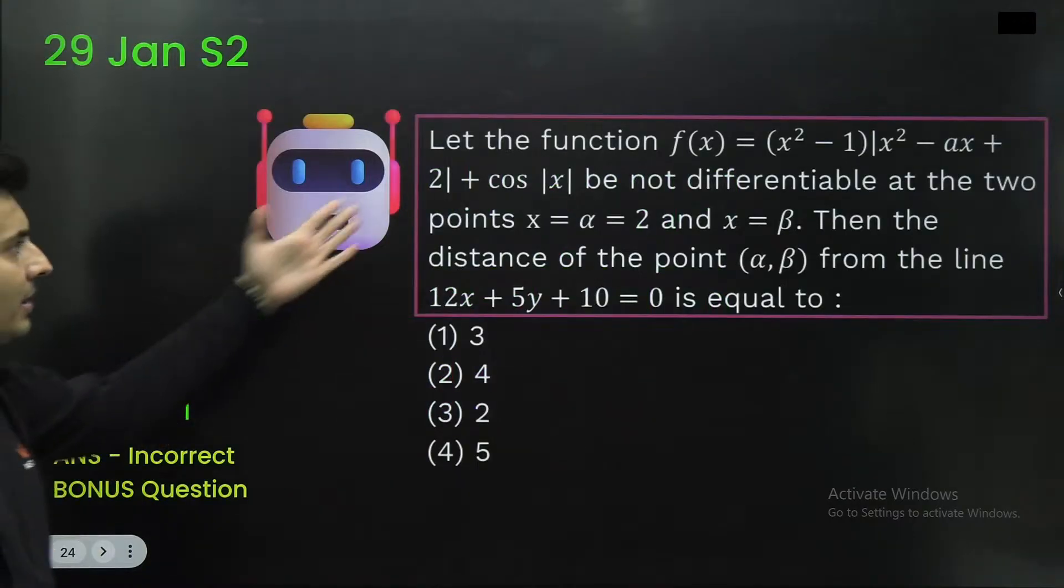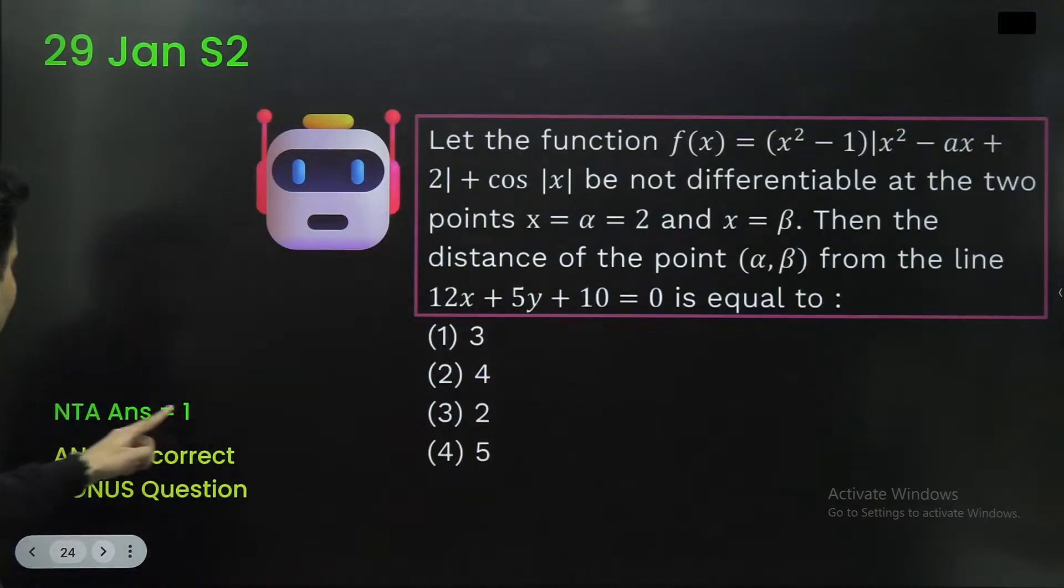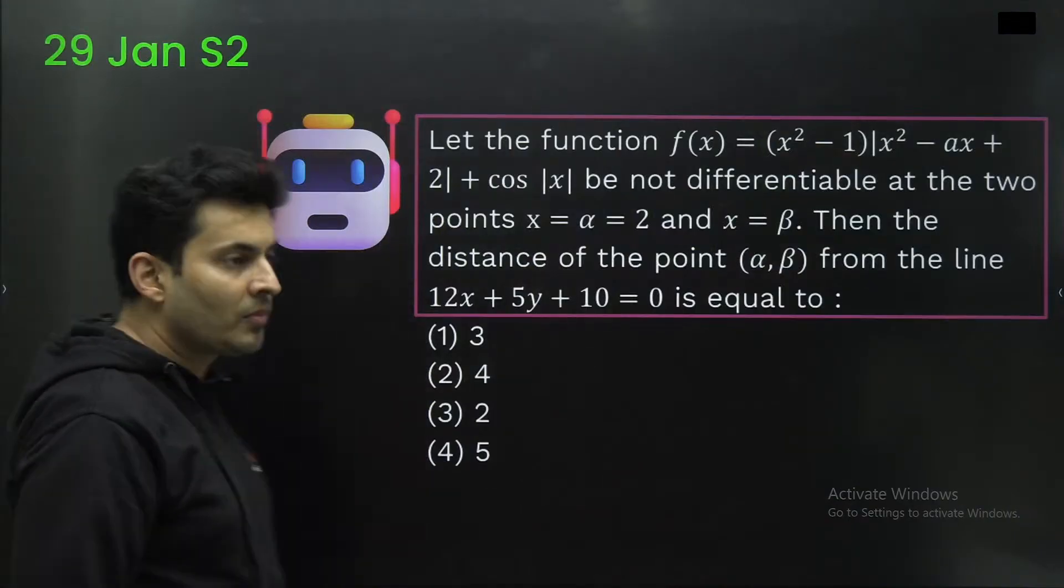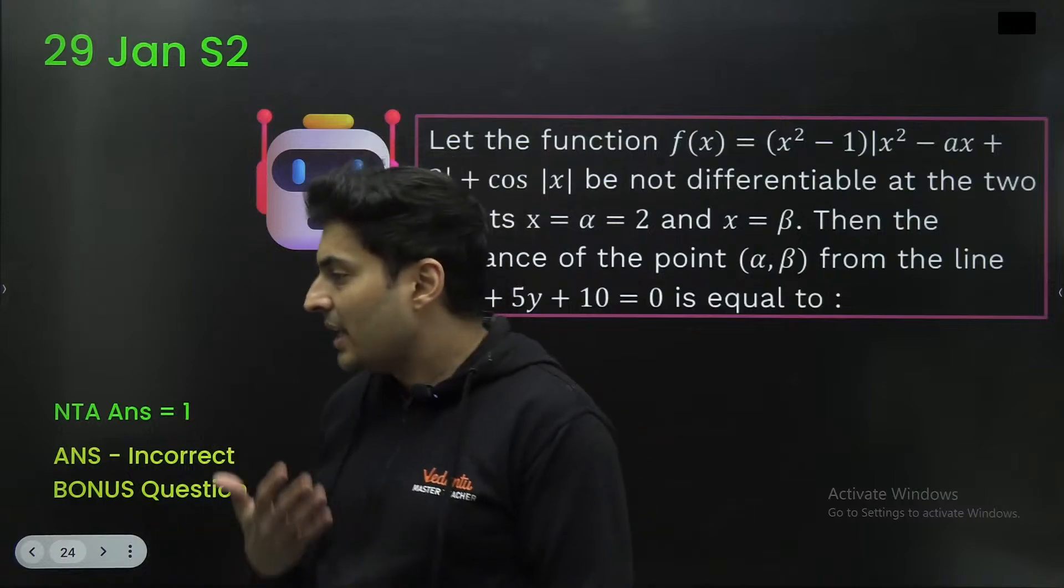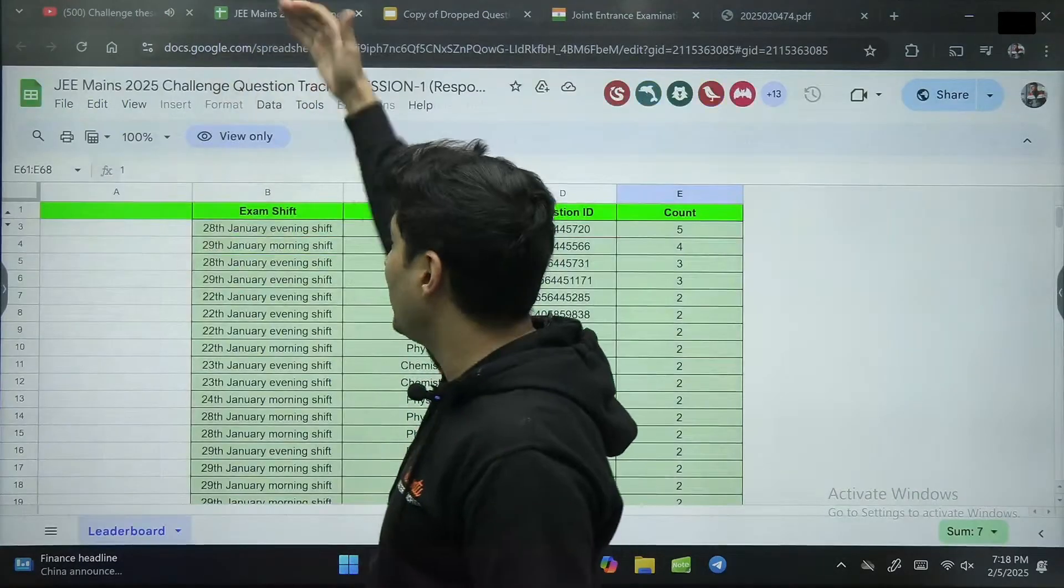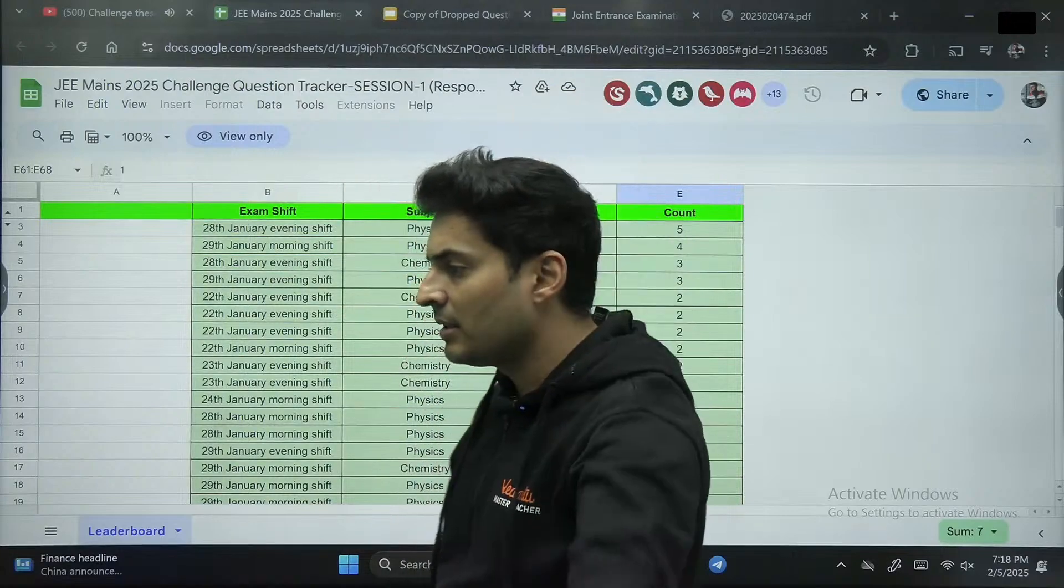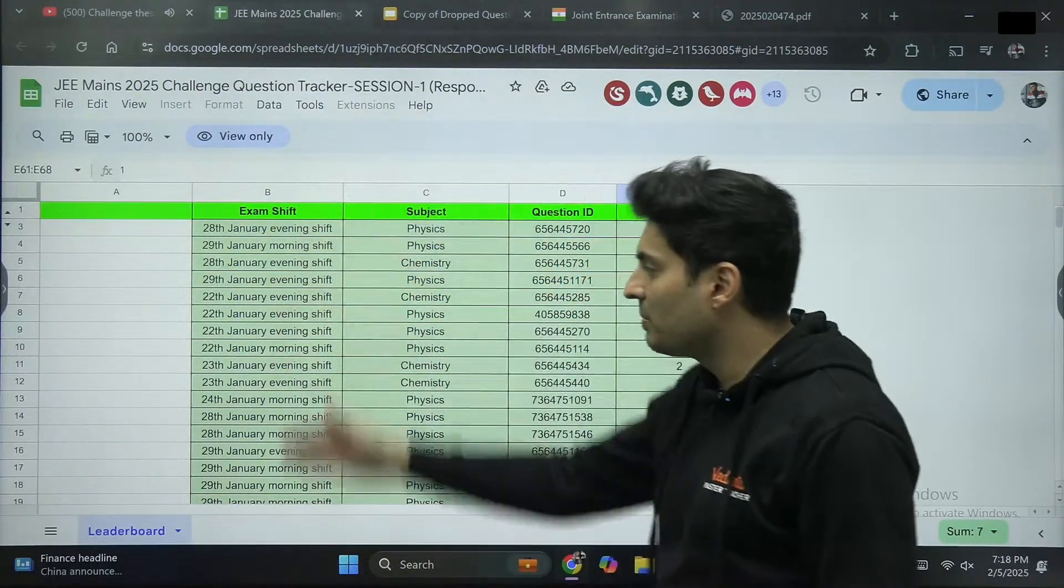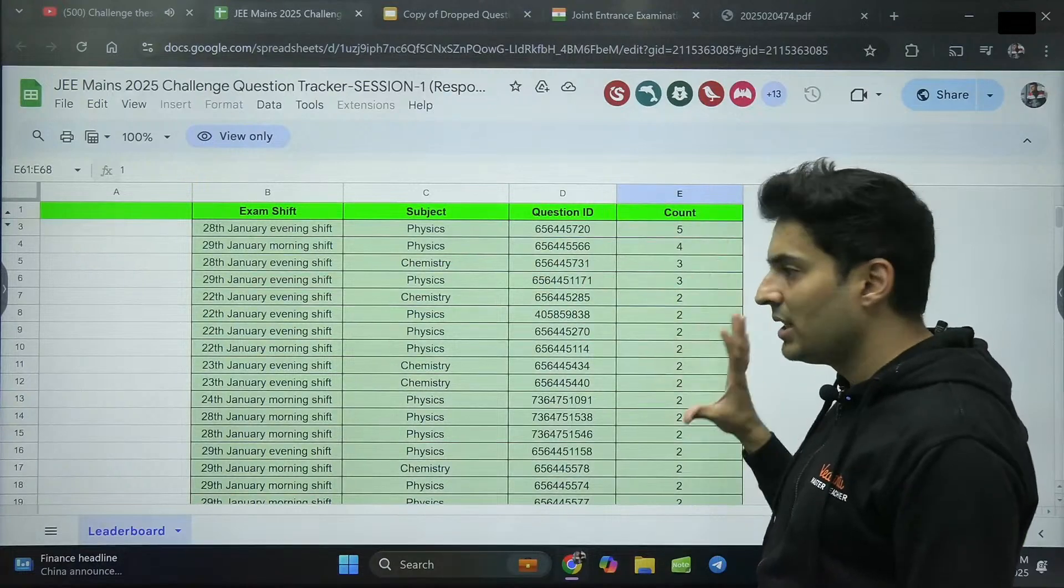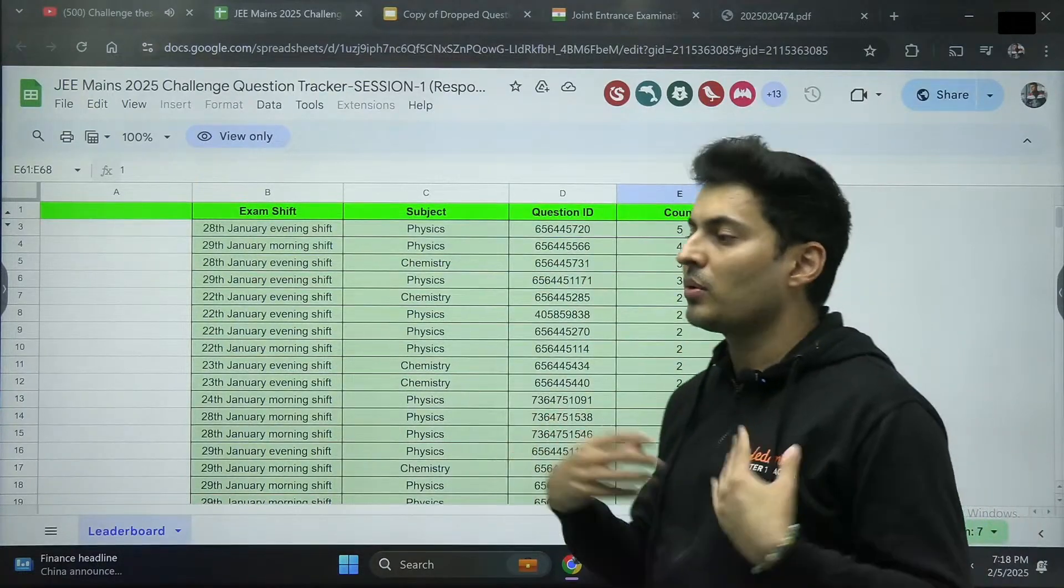You can see that this particular question, all right, NTA has given one, but this should be completely given as bonus. So all these questions should be basically challenged according to us, as you can see, and this particular tracker is being maintained. This particular tracker is being maintained over here as and when students will challenge. So that will give you that confidence. Okay. I'm on the right track.